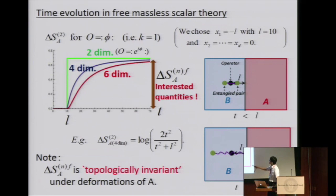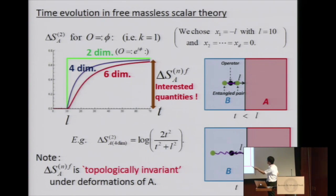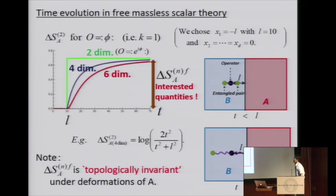If we choose the simplest operator O = phi, or in 2D, the exponential e^{i phi} (since phi itself is not a primary field there), then we have the following behavior. In 2D it's like a step function, and in higher dimensions we have some smooth increase. This is the time evolution of delta S_A^{(2)}. A similar thing happens for other values of n. This property is easy to understand from causal propagation — the operator is inserted at some point and creates an entangled pair.